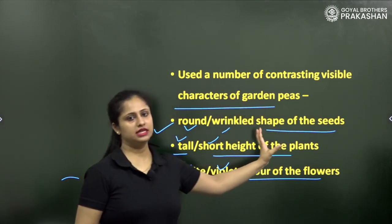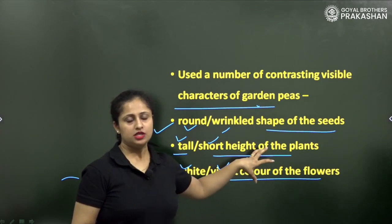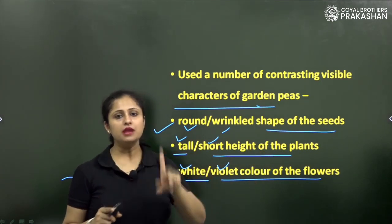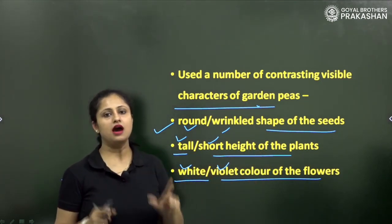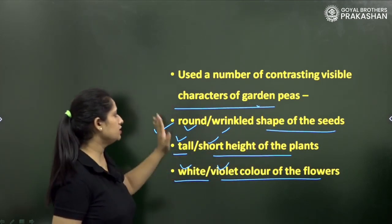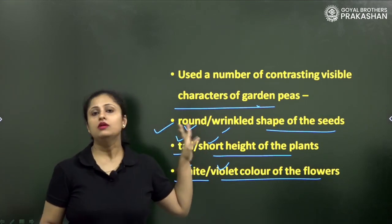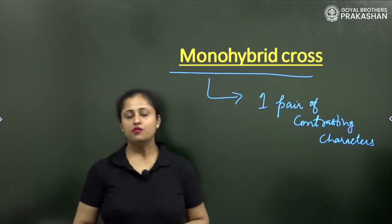In monohybrid cross only one pair of contrasting characters are considered at a time. So if I talk about the shape of the seed, it could be round or wrinkled. This can be taken in the monohybrid cross.